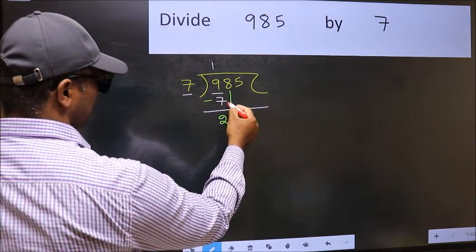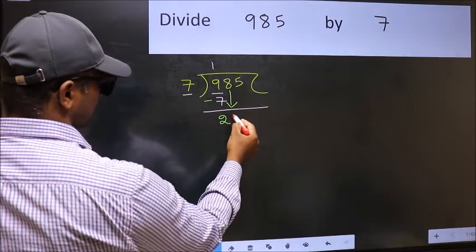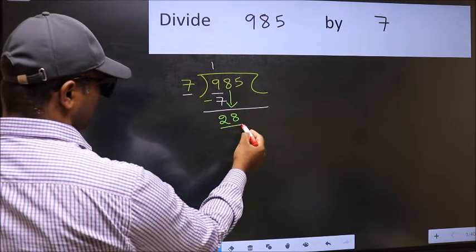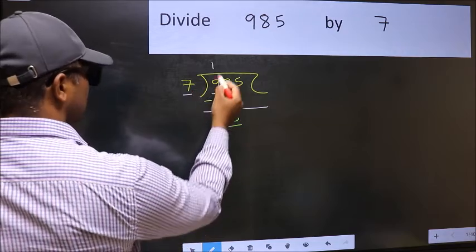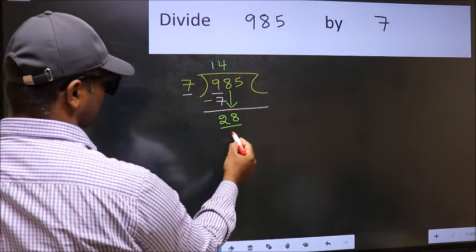After this, bring down the number beside it, so 8 down. Now 28. When do we get 28 in the 7 table? 7 fours, 28.